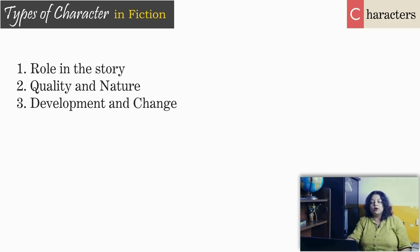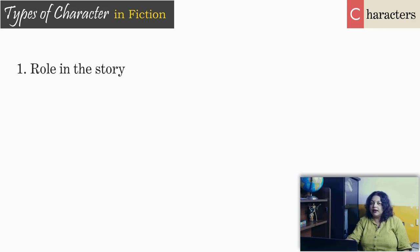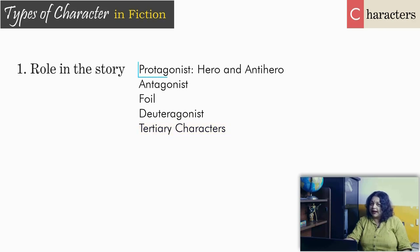First we will focus on categorizing characters — how many types of characters are there in a story based on the role that a character plays. Based on role, we can roughly categorize characters into four or maybe five types: the most important one being the protagonist, then the antagonist, then the foil, and eventually deuteragonist and tertiary characters.